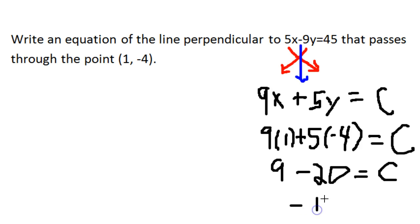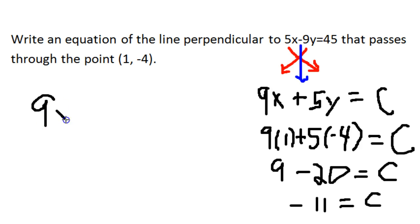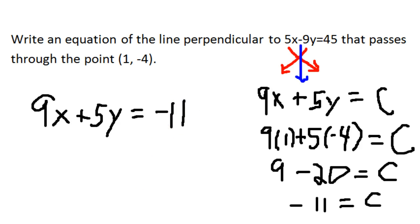Negative 11 is equal to c. So we end up with 9x plus 5y is equal to negative 11. We swapped the coefficients, changed the sign, and then took the coordinates of the given point, plugged them in, and solved for c. That gives us our equation that's perpendicular to the original line and passes through the given point.